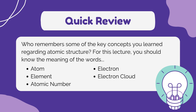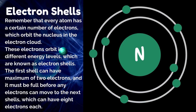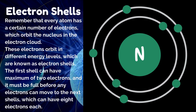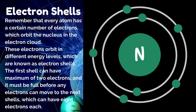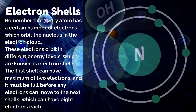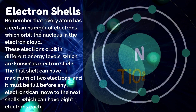An electron is a subatomic particle with a negative charge, orbiting the nucleus of an atom. An electron cloud is a three-dimensional region around the nucleus of an atom where electrons are likely to be found. Every atom has a certain number of electrons which orbit the nucleus in the electron cloud, in different energy levels known as electron shells.